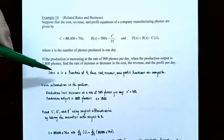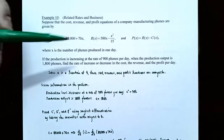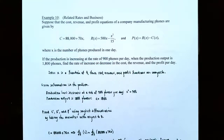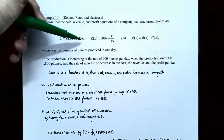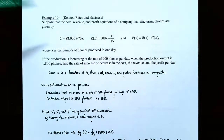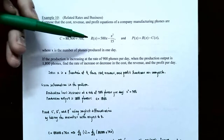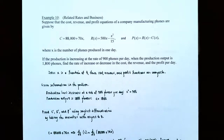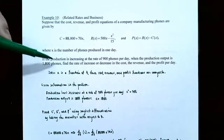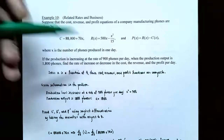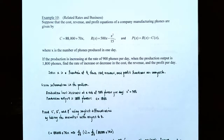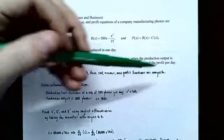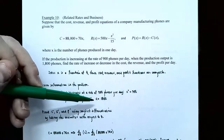Since X is a function of time, the cost, revenue, and profit are all composite functions — cost depends on X, but X depends on time T, and similarly for revenue and profit. Time is measured in days. The given information: production is increasing at 900 phones per day, so X prime equals 900. The production output is 1,800 phones, so X equals 1,800.